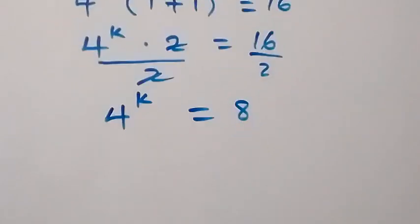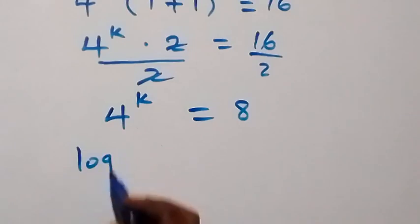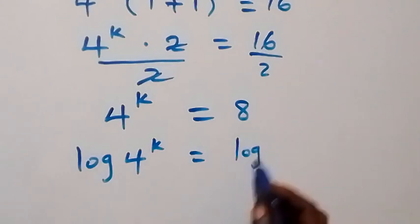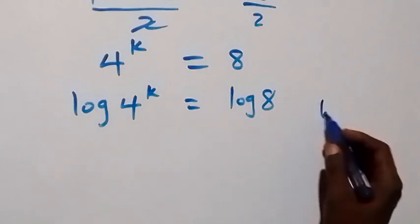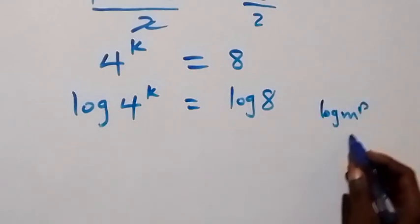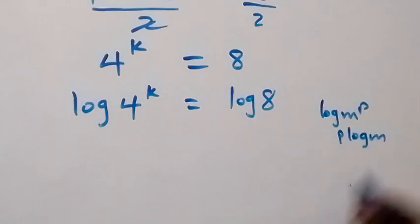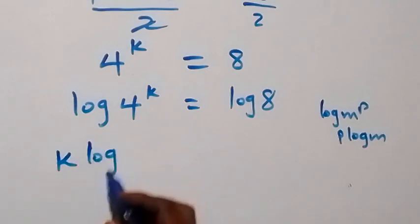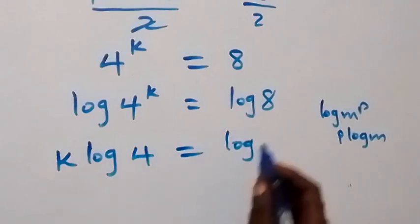From here, we take the log on both sides. We have log of 4 raised to power k equals log 8. Applying the power law of logarithms — log m raised to power p equals p log m — this becomes k log 4 equals log 8.